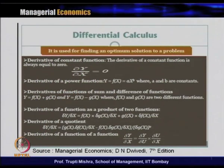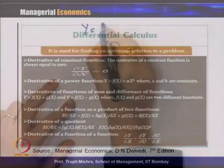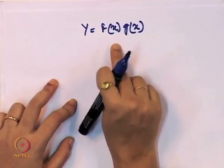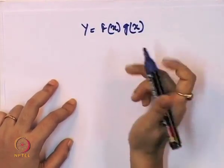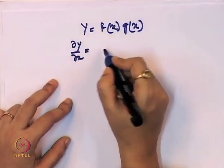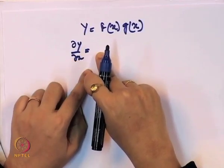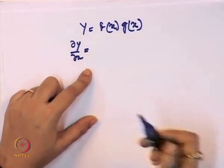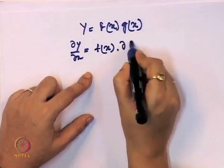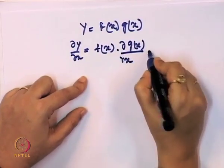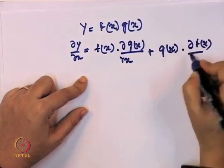Next is the derivative of a function that is a product of two functions. In the last case we handled summation and subtraction. Now when the functional form is y = f(x)·g(x), we take the derivative by keeping the first function constant and differentiating the second, then keeping the second constant and differentiating the first. So del y / del x = f(x)·dg(x)/dx + g(x)·df(x)/dx.